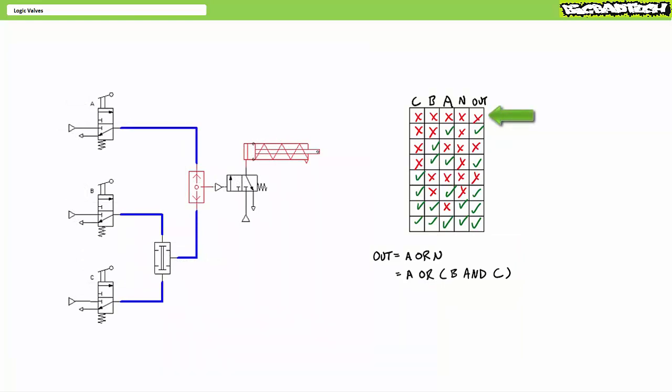With no signal at CBA, the system yields no output. With no signal at CB and a signal at A, the system yields output. With no signal at CA and a signal at B, the system yields no output. With no signal at C and a signal at BA, the system yields no output. With no signal at BA and a signal at C, the system yields no output.